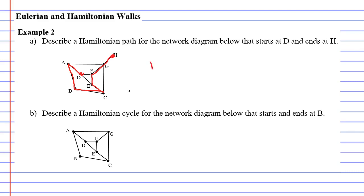So I need to describe this using the letters that represent each vertex. So we went D to A to B to C to E to F to G to H. Excellent. It is a Hamiltonian path because we pass through every vertex only once and we started and ended at a different vertex.